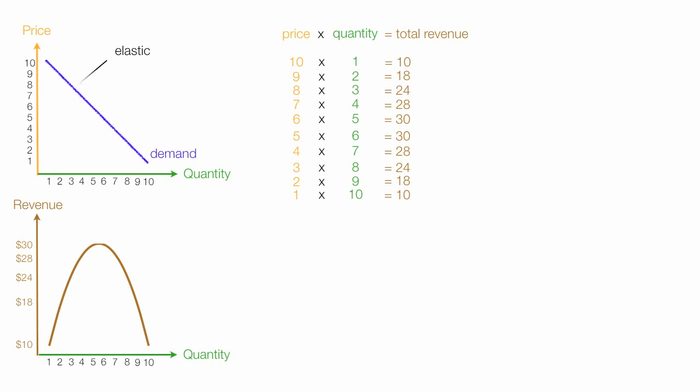The top part of the curve is elastic because a price decline causes revenues to increase. The part of the curve where revenue is flat is called unit elasticity. And the part of the demand curve where a price decline causes revenues to fall is called inelastic.